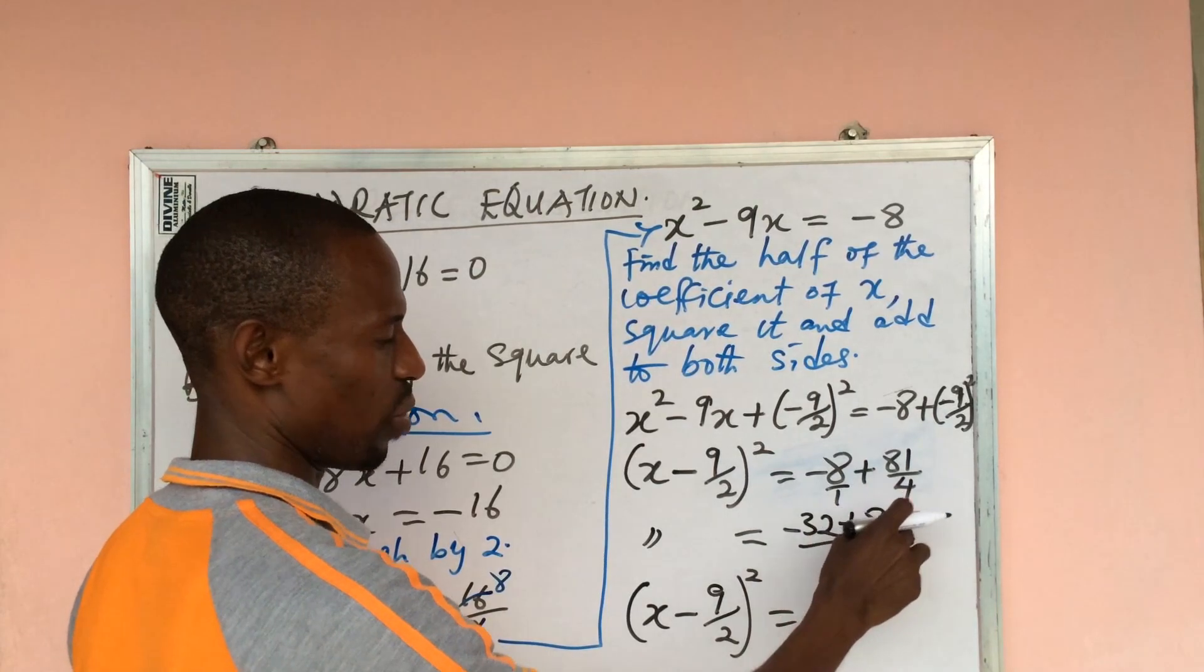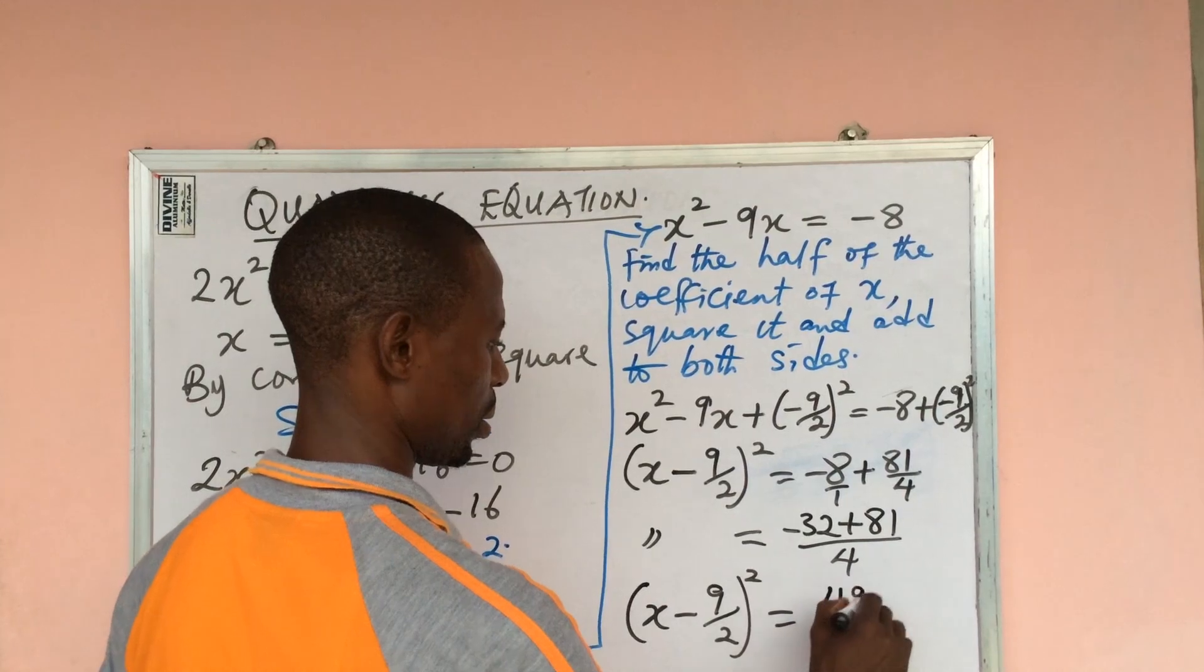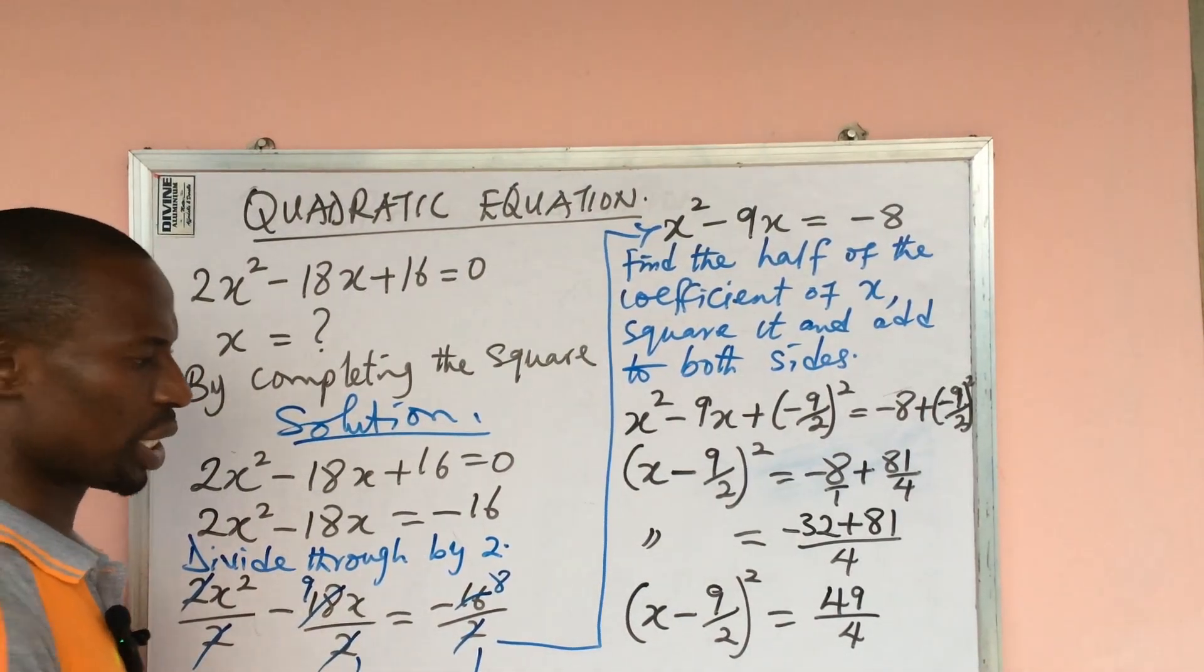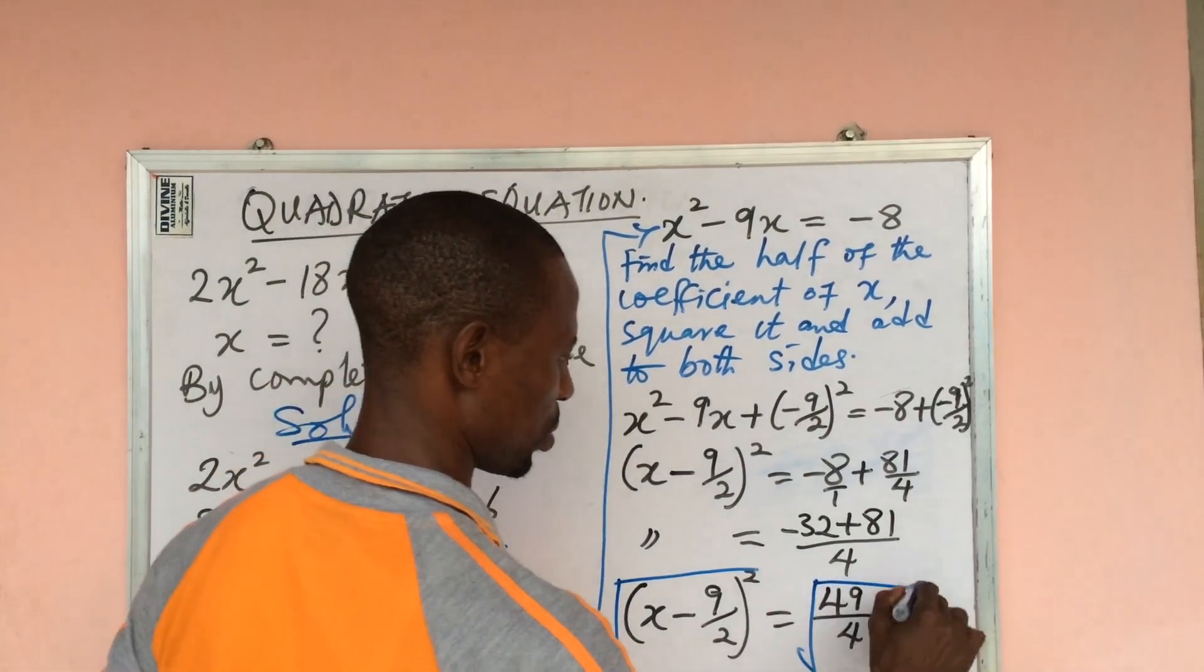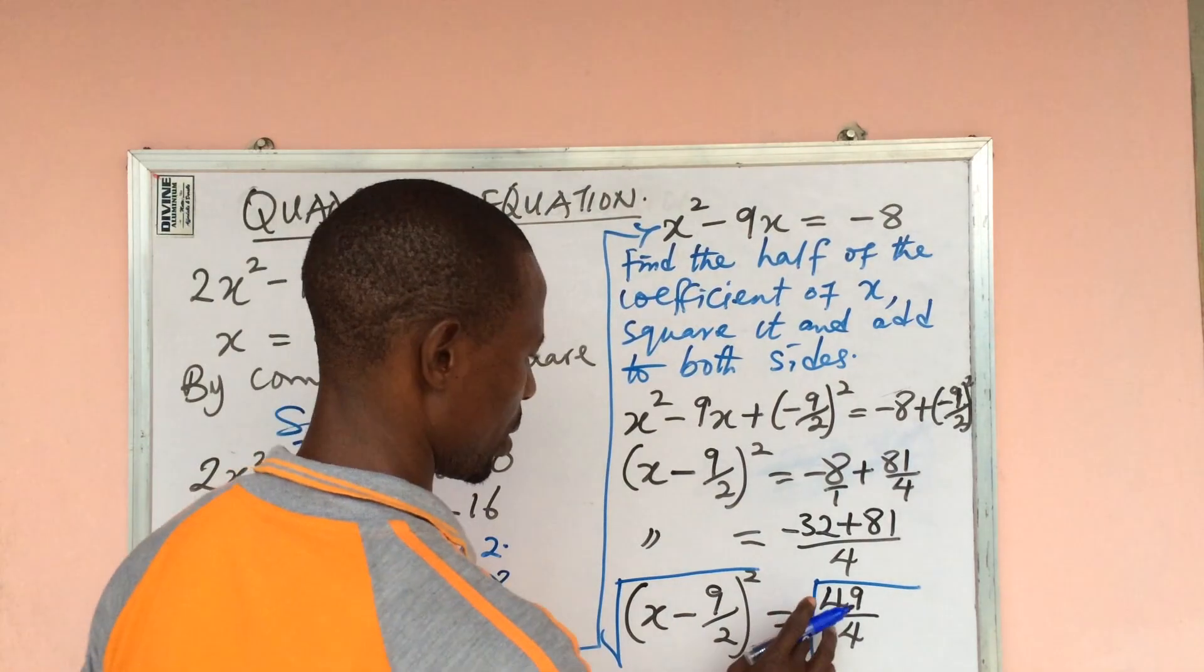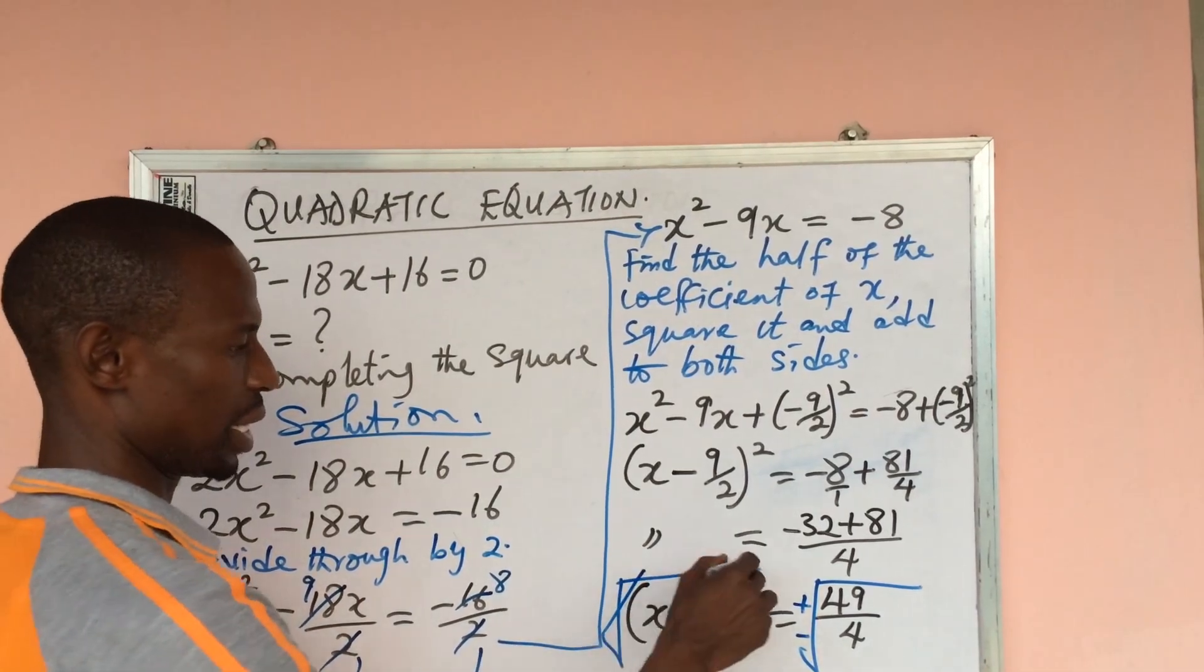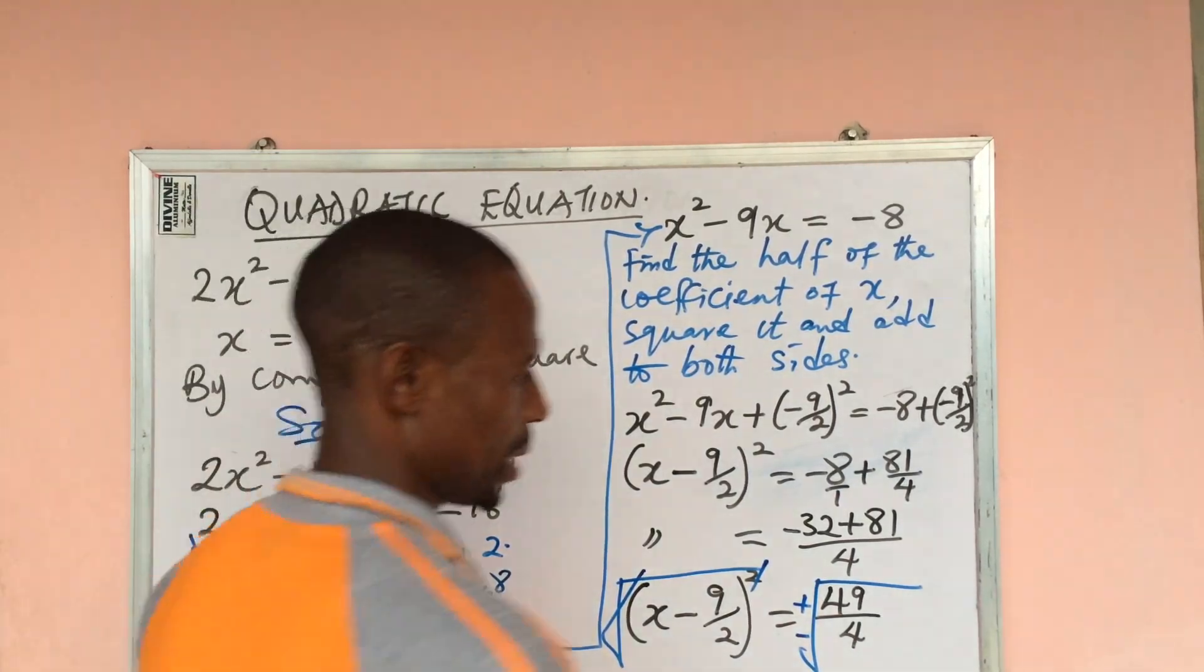So if we now carry out the subtraction here, -32 + 81 gives us 49/4. So at this point we take the square root of both sides. And immediately you take the square root, you bring your plus and minus sign to this side.